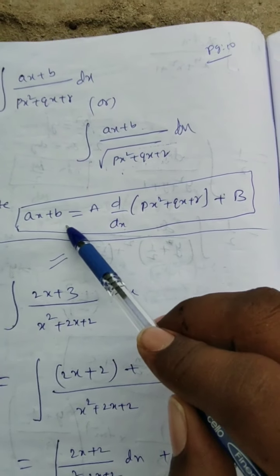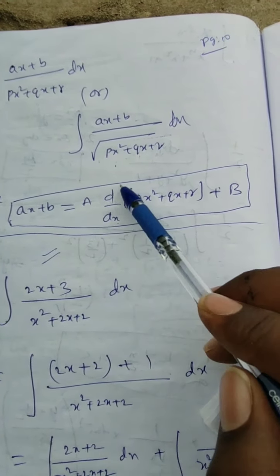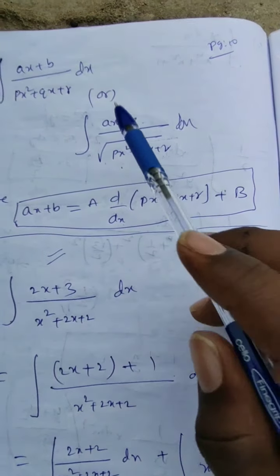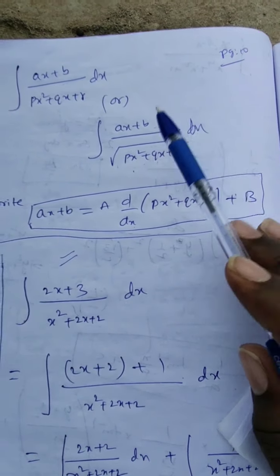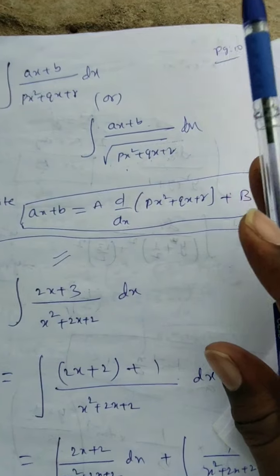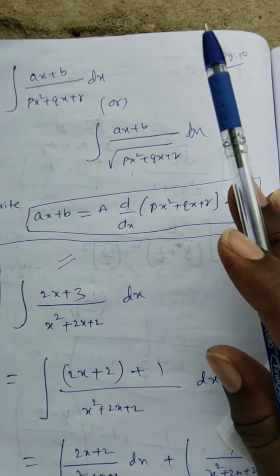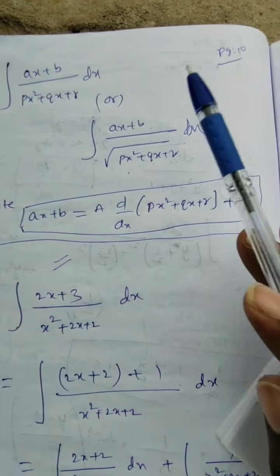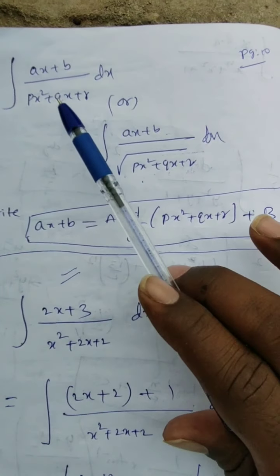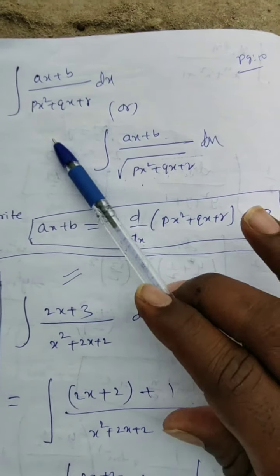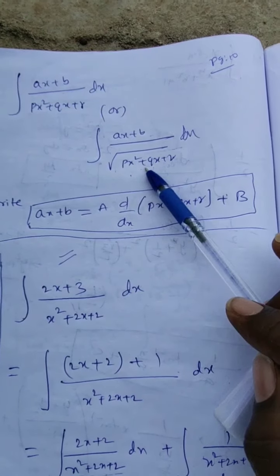When you have linear by quadratic or linear by under root of quadratic, you can write the linear part as a times d/dx of the quadratic plus b. This is not partial fraction form — partial fractions is a very important topic I will explain later. Today I am covering linear by quadratic and linear by square root of quadratic problems.